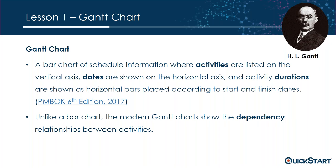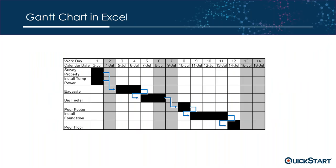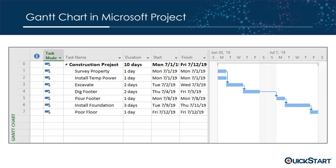I took that bar chart in Excel and created lines with arrows showing the inter-relationship between tasks — the dependencies between these tasks. This is an example of a Gantt chart in Excel that has those dependencies. The next slide is a snapshot from the Gantt chart view in Microsoft Project, which by default shows tasks down the left-hand side, dates across the top, duration depicted by bar length, and dependencies shown with arrows.